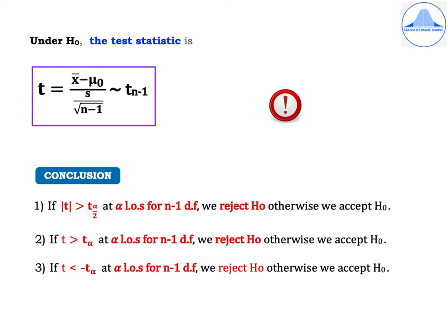Similarly, if we are testing a null hypothesis against an alternative which is right tail, then you have to check if t value is greater than t alpha at alpha level of significance for n minus 1 degrees of freedom. Then we reject H0, otherwise we accept H0. Again t value can be computed from the statistical table under the t-test. You have to look for t alpha value under the right tailed test or the upper tailed test.